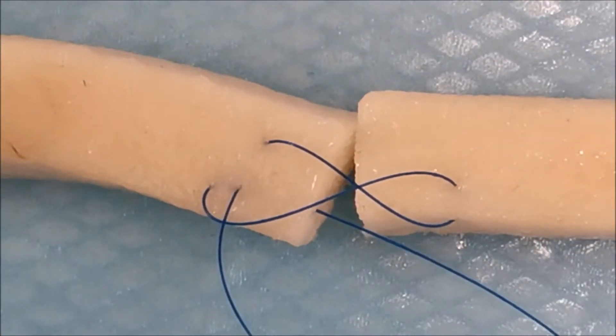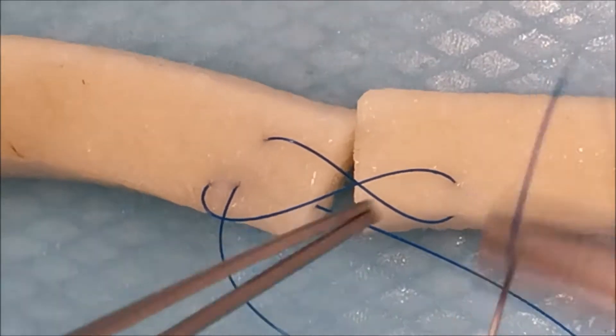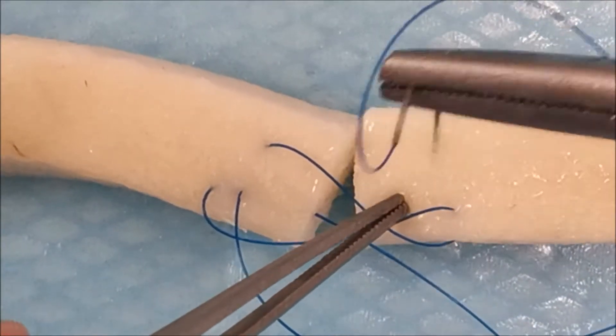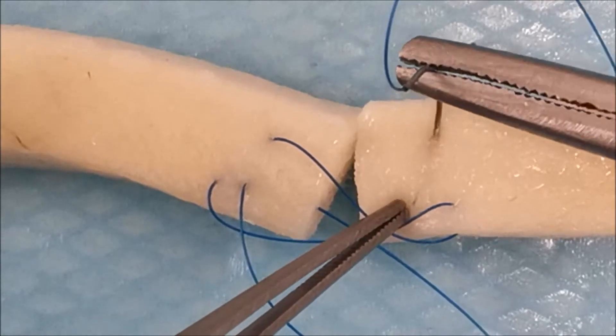You create a continuous running figure of eight lattice net-like structure around the tendon.